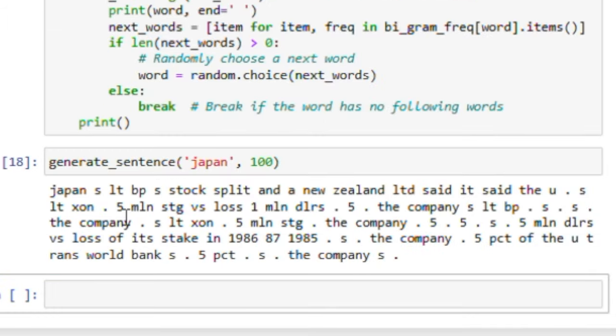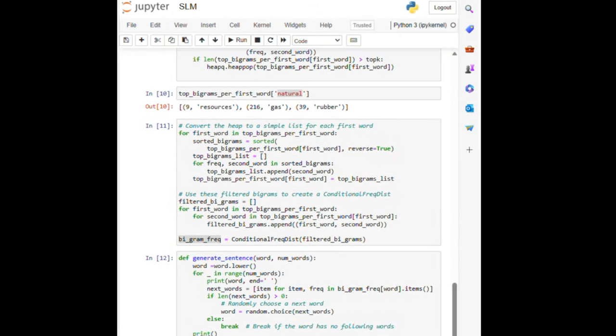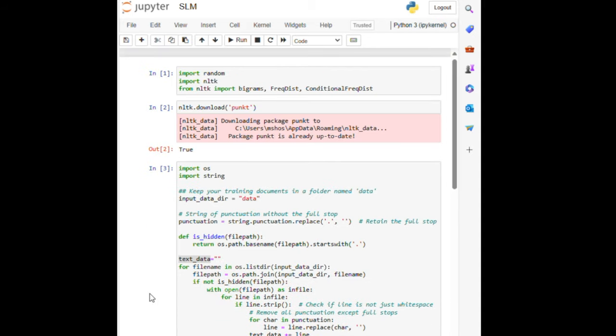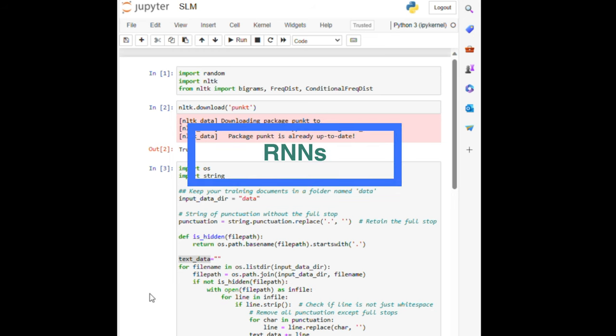This is a basic but powerful bigram-based language model built in Python. This simple language model is a stepping stone for more complex NLP projects. More sophisticated models slowly started to use recurrent neural networks, long short-term memories, and, with modern large language models, transformers.